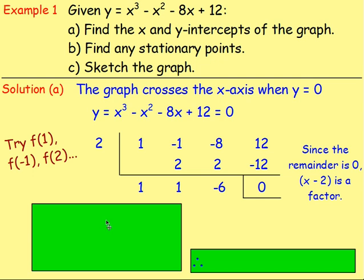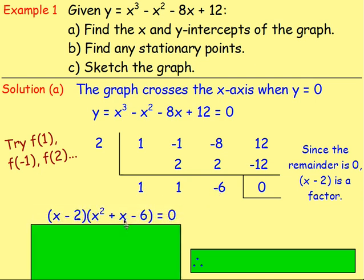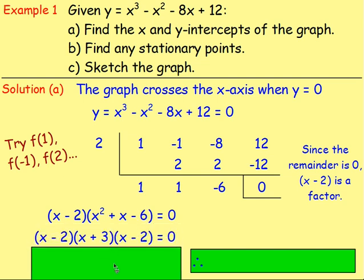And the way you get the coefficients of the next part is you look at the numbers you have down here. So if this is x cubed, this will be 1x squared plus 1x minus 6. From there, see if you can factorize x squared plus x minus 6. Well, you can.